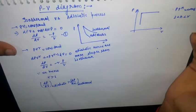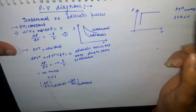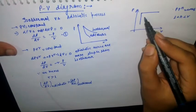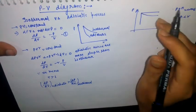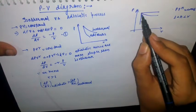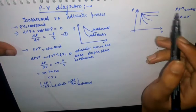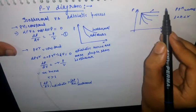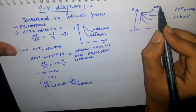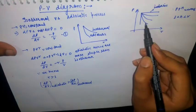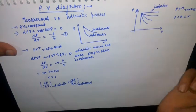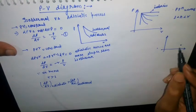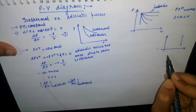I will give more detail about this, but for now I am drawing the curves — so please watch carefully. This will be isothermal, this will be adiabatic, and this will be polytropic. This is isochoric and this is isobaric. Confusion arises when we draw these curves.